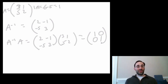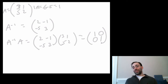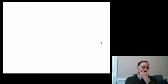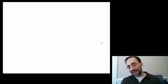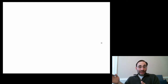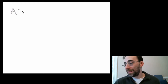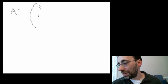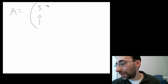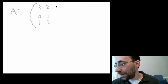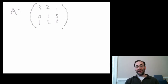For a 2x2 matrix you can memorize the formula, but for more complicated matrices you must use the original definition. I'll do one example of a 3x3 case. Here's a random matrix I'm making up: [3, 2, 1; 0, 1, 5; 1, 2, 0]. I'll put some zeros in it to make life a bit easier, making sure there are no obvious linear dependencies between rows or columns.